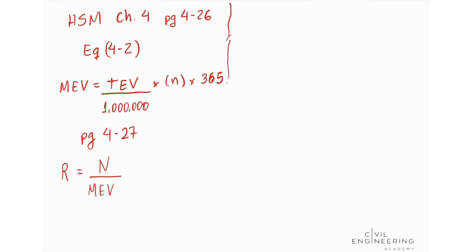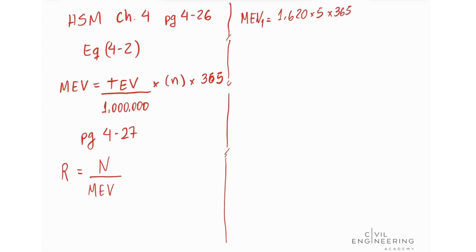We can now input values into these equations to calculate the rate for each intersection. Starting with MEV for intersection one: 1620 times 5 years times 365, divided by 1 million (10 to the 6). That gives us 2.96. Now calculating the MEV for the second intersection.